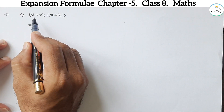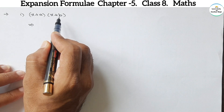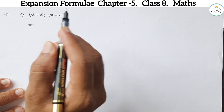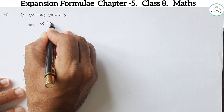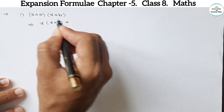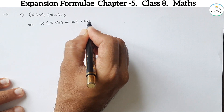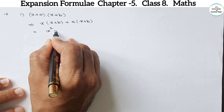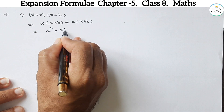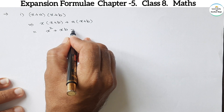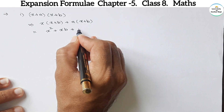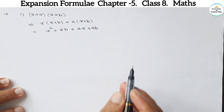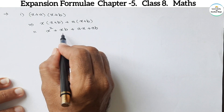Now let's start with our first formula: (x+a)(x+b). To solve, multiply each term of the first bracket by the second bracket. Multiply x by (x+b), then plus a multiplied by (x+b). Expanding: x times x gives x², then x times b gives xb. Then a times x gives ax, and a times b gives ab.